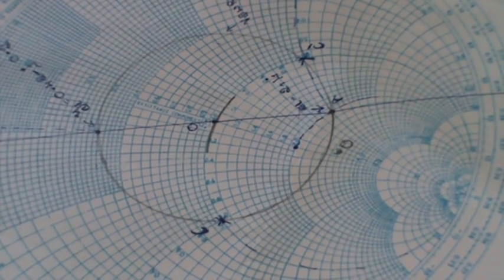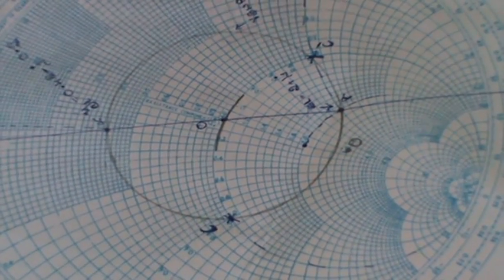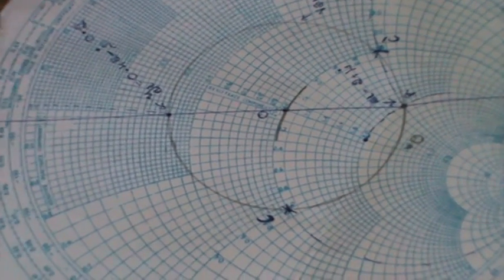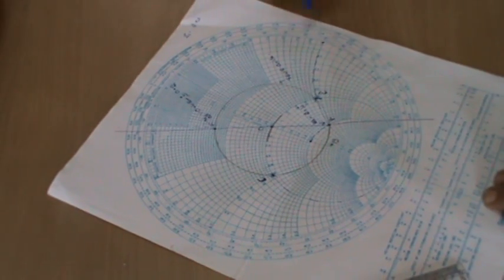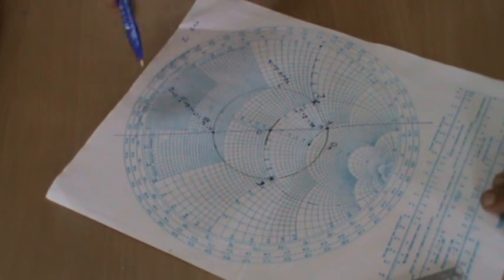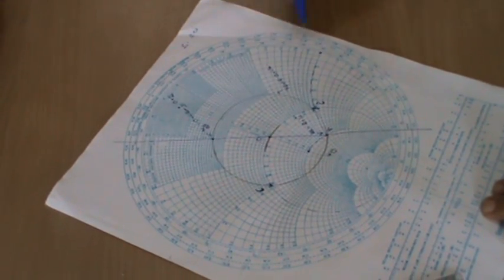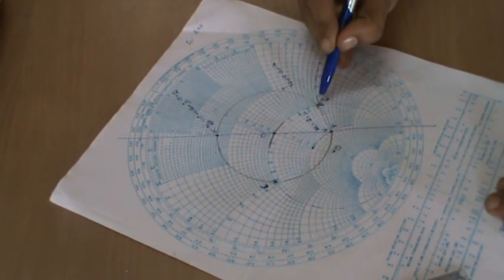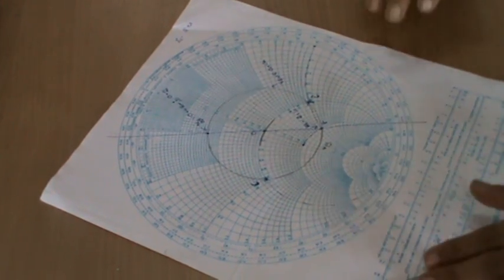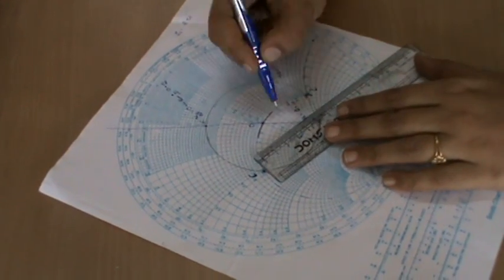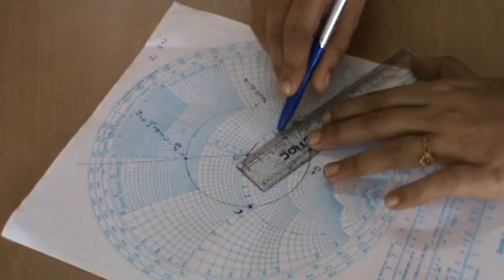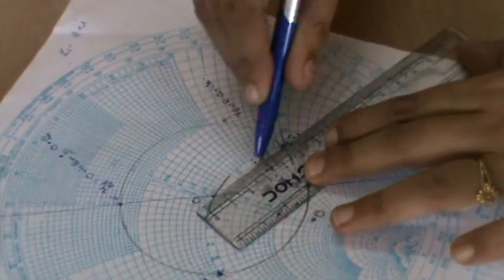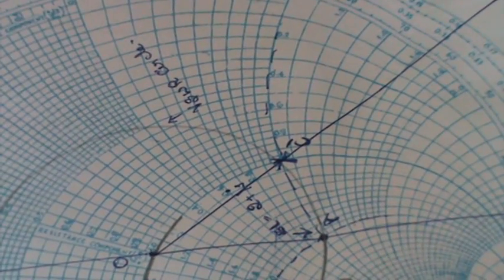What you need to do is now we have got two points but we always move towards the generator. Move towards the generator and find the nearest point. When you move towards the generator the nearest point will be C dash. Draw a straight line from O to C dash and extend so that it cuts the outer circle.